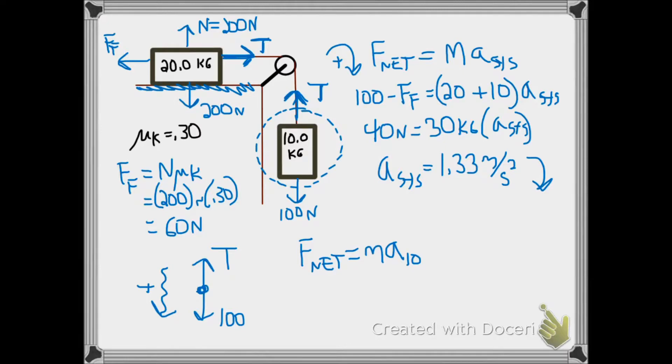Getting F net from the diagram, we have 100 minus the tension equals our mass of 10 kilograms times the acceleration. But if the system is accelerating at 1.33, every part of the system is. Doing the algebra, we see tension as 86.7 newtons.